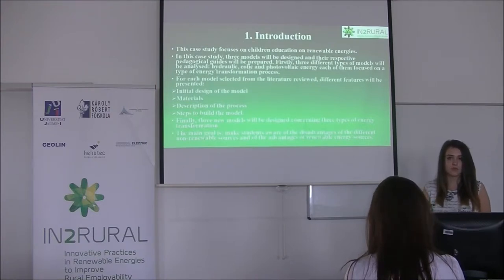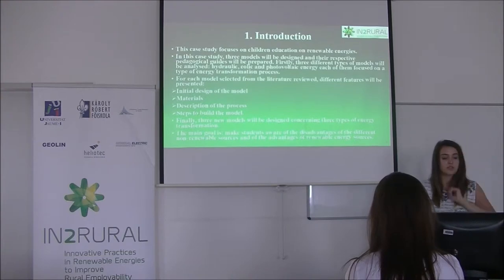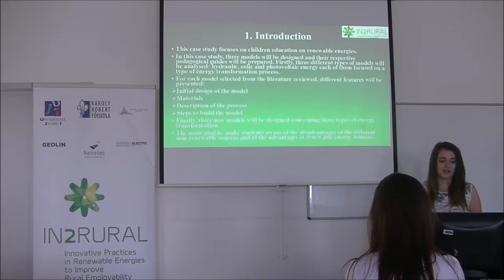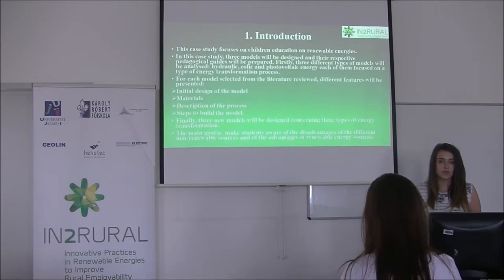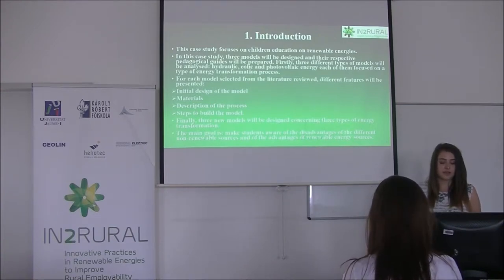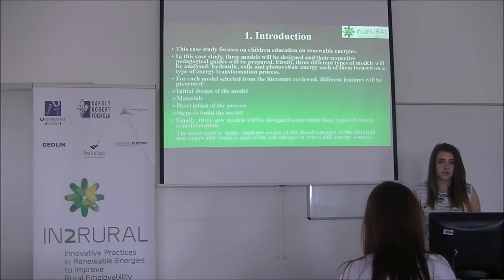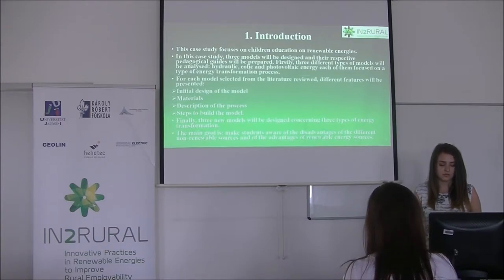Introduction. This case study focuses on children's education of renewable energies. Three models will be designed and their respective pedagogical guides will be prepared. Three different types of models will be analyzed: hydraulic, eolic, and photovoltaic energy, each focusing on a type of energy transformation process. For each model selected from the literature review, different features will be presented: initial design of the model, materials and components, description of the process, and steps to build the model. Finally, three new models will be designed concerning three types of energy transformation. The main goal is to make students aware of the disadvantages of non-renewable sources and the advantages of renewable energy sources.